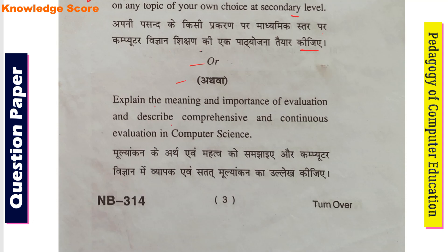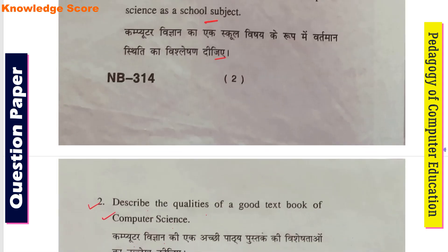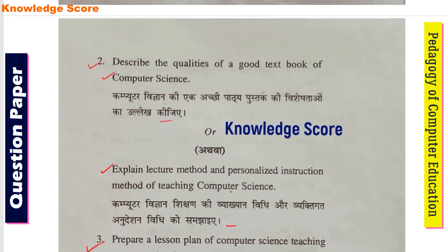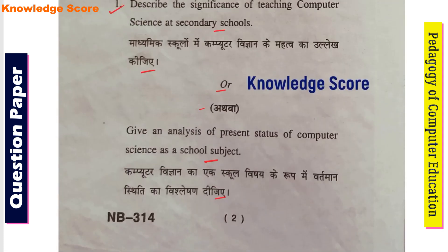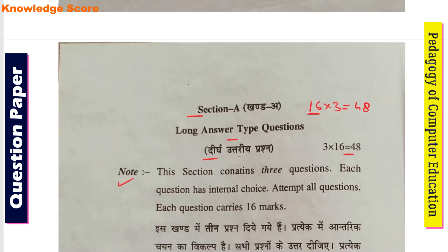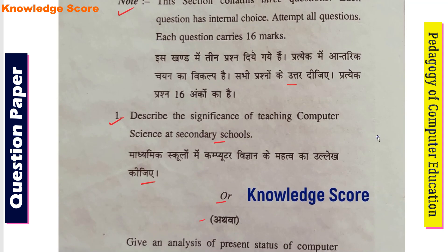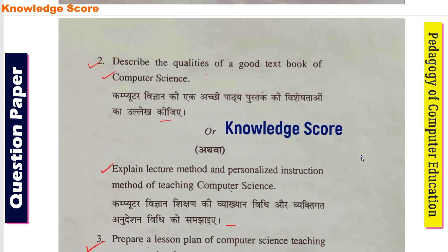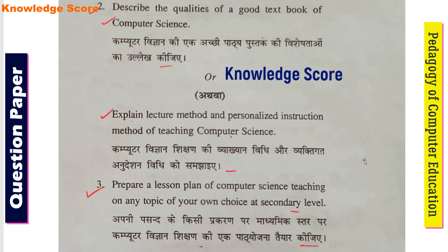Also, explain the meaning and importance of evaluation, and describe comprehensive and continuous evaluation in computer science. Section A of this paper is now completed. Since these are long answer type questions, you should answer each on at least 4 to 5 pages.